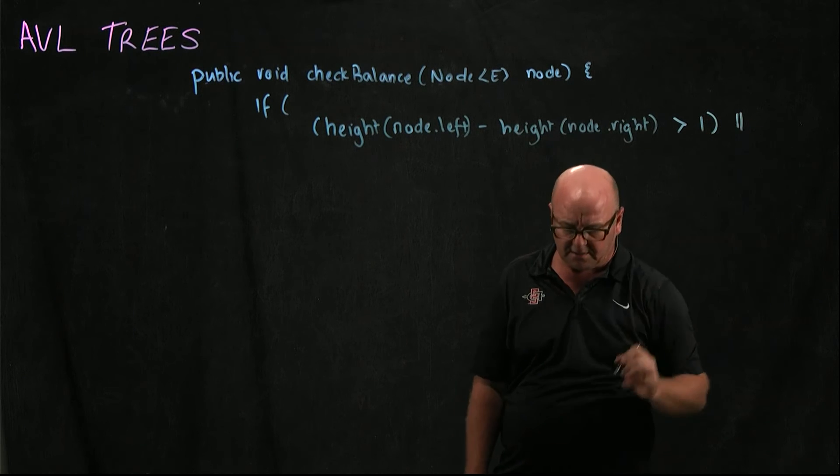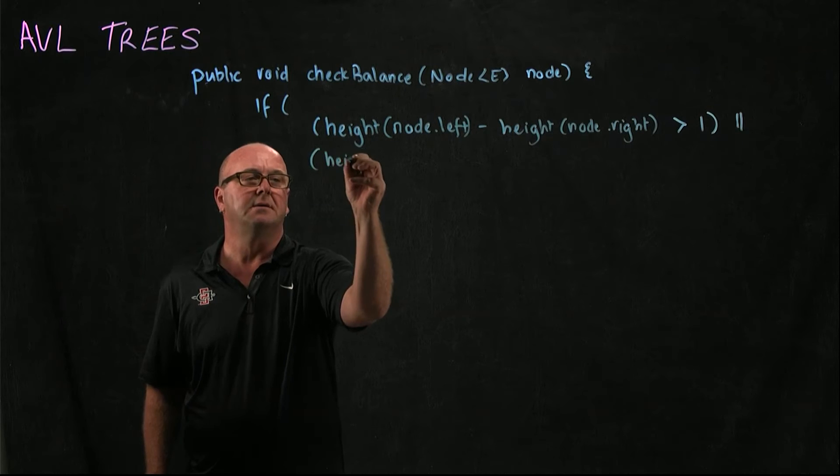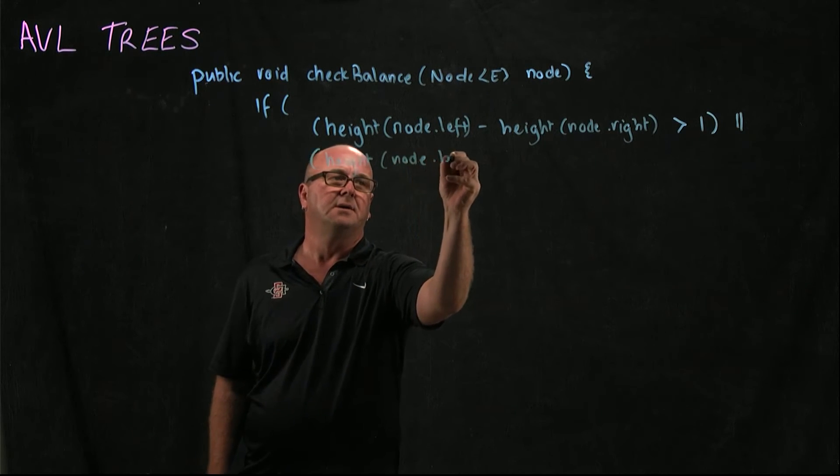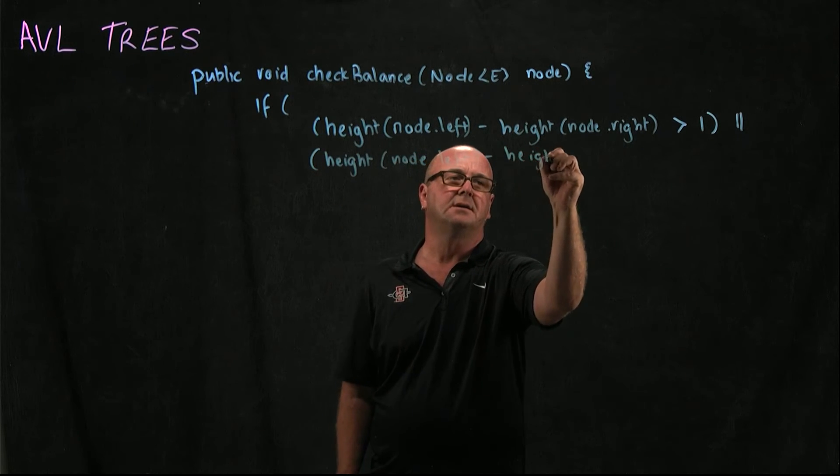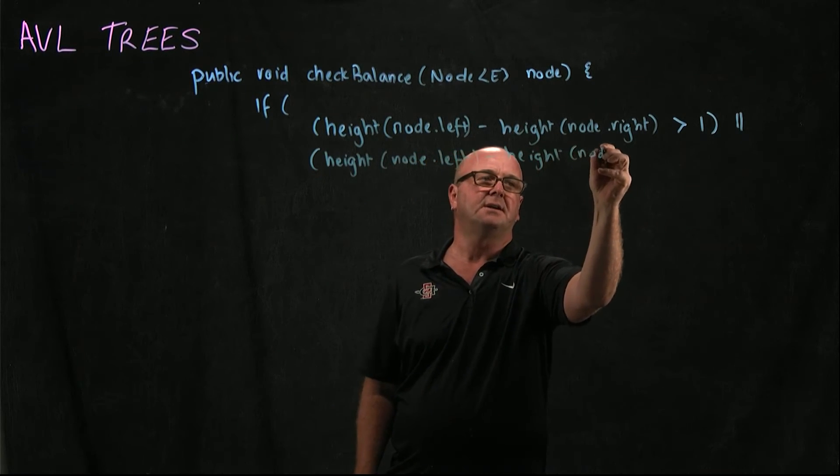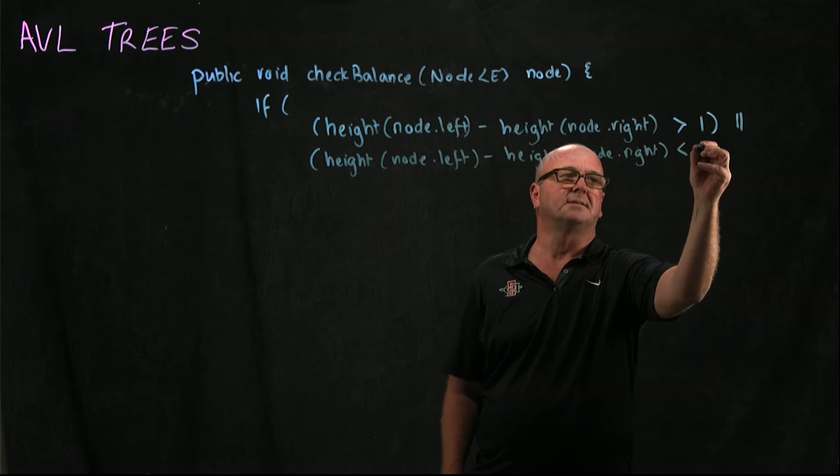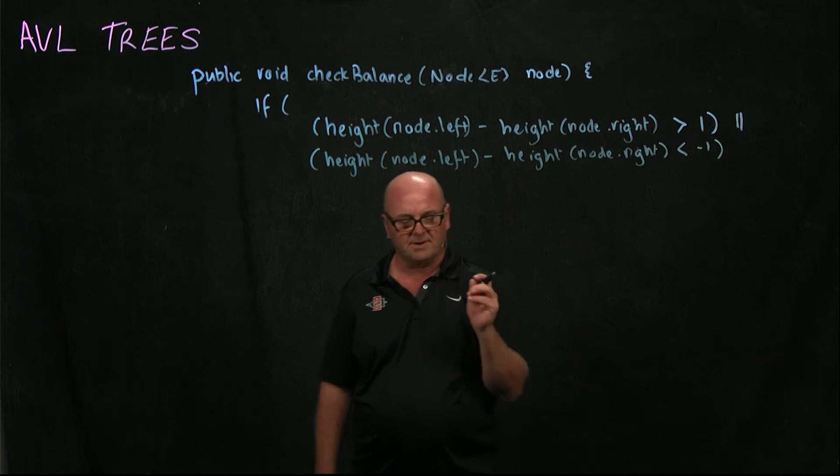Or if height(node.left) minus height(node.right) is less than minus 1. In either case, we need to rebalance the tree.